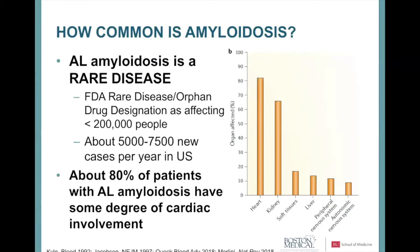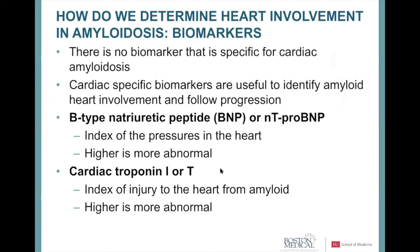AL amyloidosis is a rare disease. The FDA defines a rare disease as affecting fewer than 200,000 people; AL amyloidosis affects about 5,000 to 10,000 — probably around 7,500 new cases per year in the United States. About 80% of those patients have some degree of heart involvement, either clinically manifest by symptoms or only measurable by blood test abnormalities. Kidney involvement is also very common.